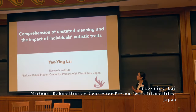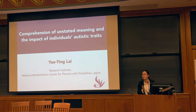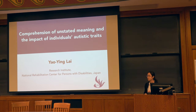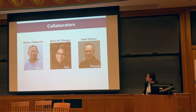I'm going to present a work on comprehension of unstated interactive meaning and the impact of individual's autistic traits, geared toward individual variation in meaning comprehension in real-time. This work is done in collaboration with Michiro Maguchi at MySan Institute, Maria Priyango et al., and Sakai Hiromu at Watanda University in Japan.